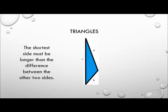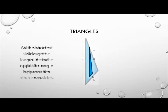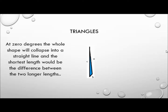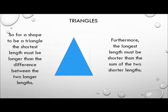Likewise, the shortest side must be longer than the difference between the two other sides. As the shortest side gets smaller, the opposite angle approaches 0. At 0 degrees the whole shape collapses into a straight line, and the shortest length becomes the difference between the two longer lengths. So for a shape to be a triangle, the shortest length must be longer than the difference between the two longer lengths. Furthermore, the longest length must be shorter than the sum of the two shorter lengths.